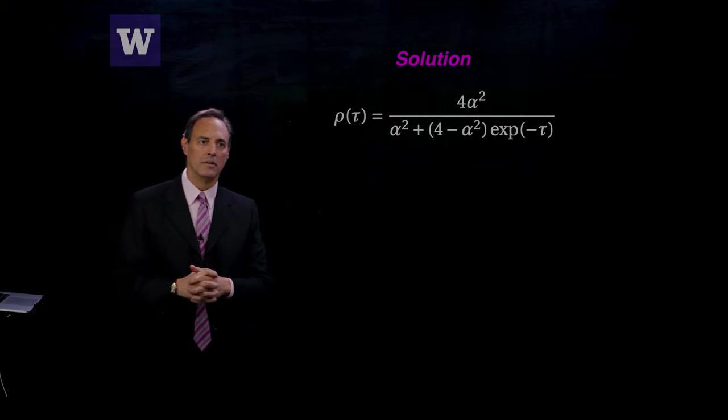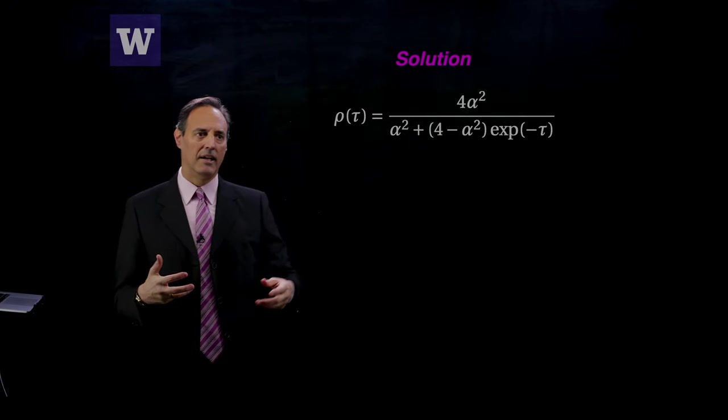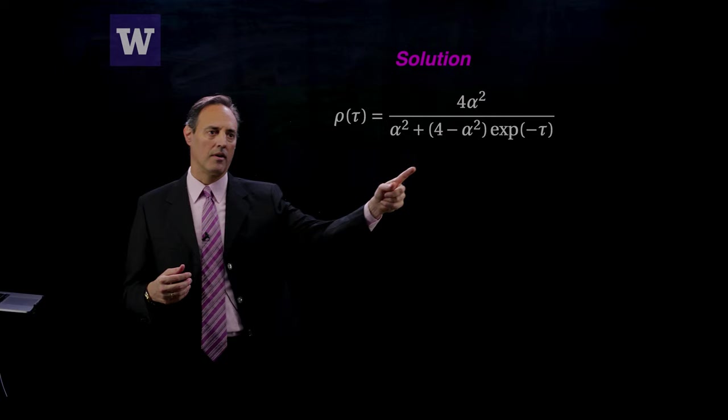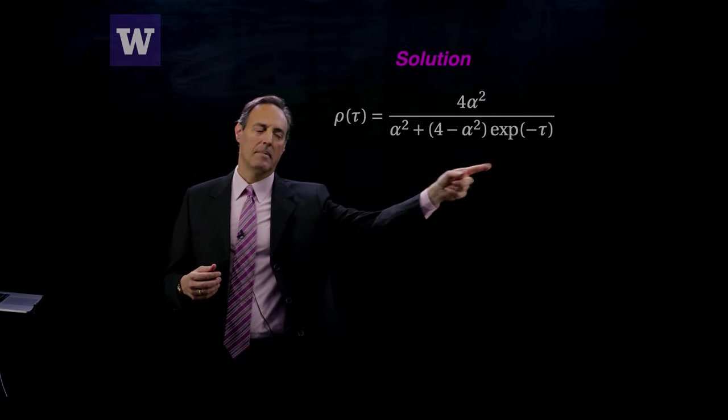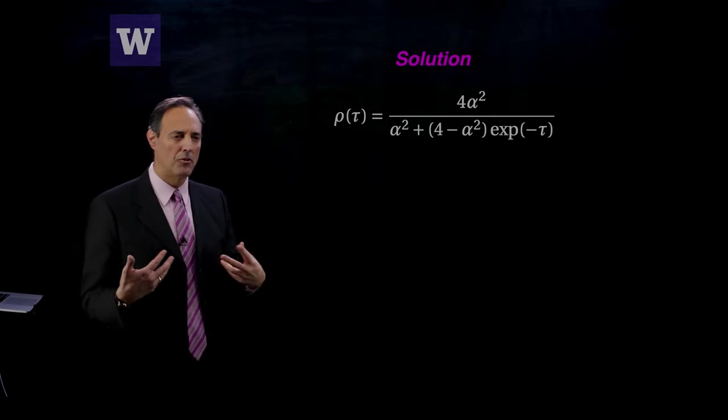When you do that, here is the solution. You solve that and get your solution: 4α^2/(α^2 + (4 - α^2)e^(-τ)). First of all, let's talk about the behavior of this.